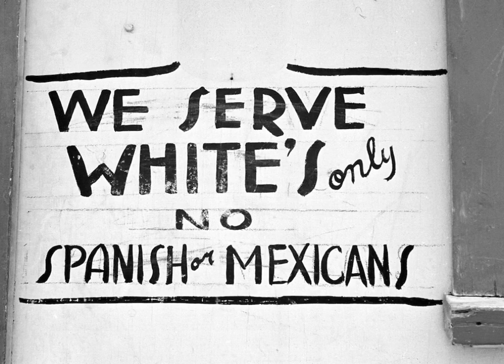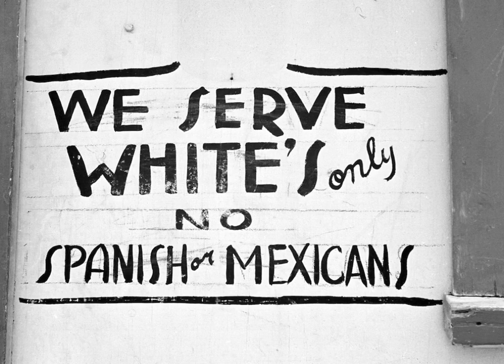The question before the court is: is it a denial of the 14th Amendment equal protection clause to try a defendant of a particular race or ethnicity before a jury where all persons of his race or ancestry have, because of that race or ethnicity, been excluded by the state? Is it unconstitutional for somebody to be tried in front of a jury? Remember, it's supposed to be a jury of your peers.